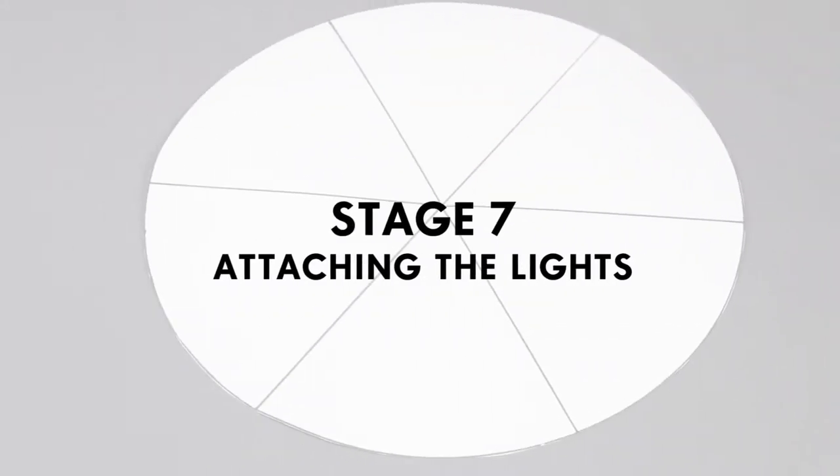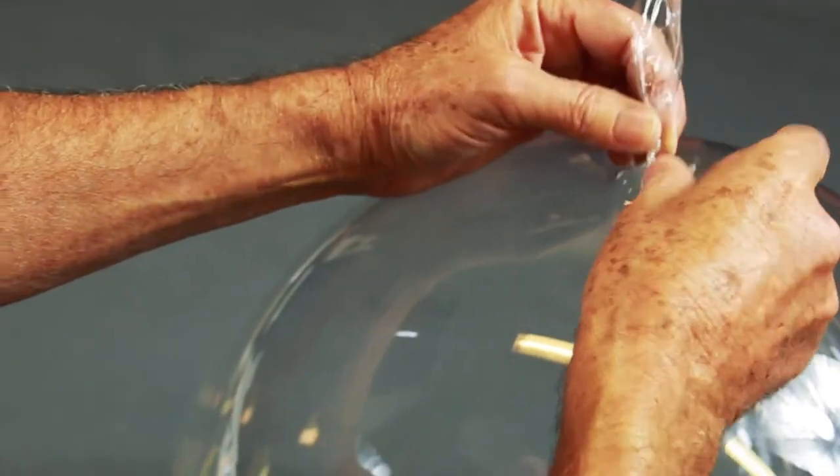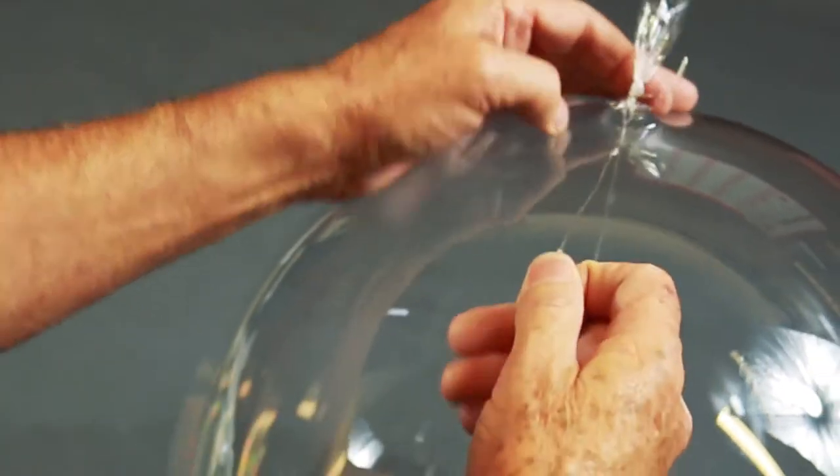Stage 7 is attaching the lights to the balloon. You can see from the template guide that you must make 3 loops around the balloon to complete the pattern. First tie the end of the wire onto the balloon neck and make sure it is secure.